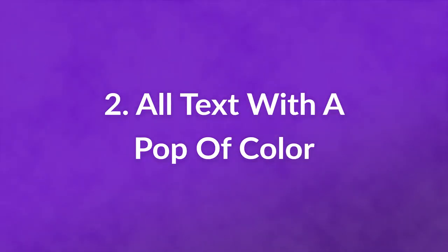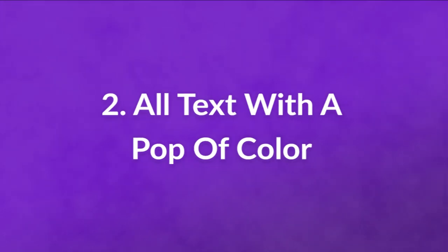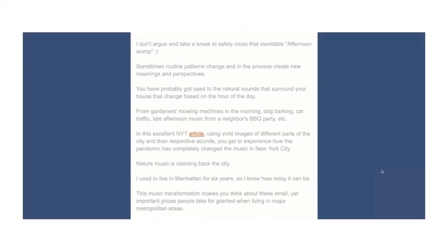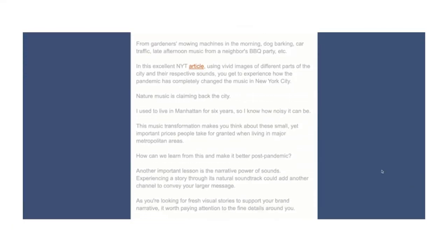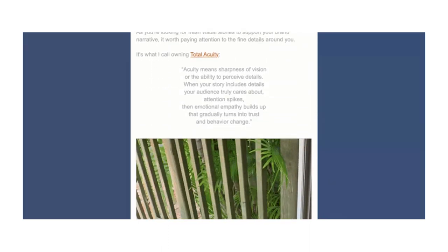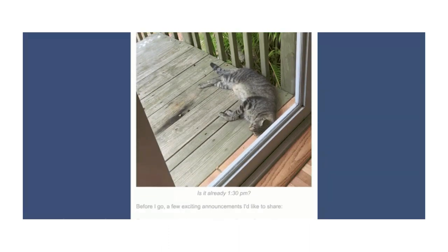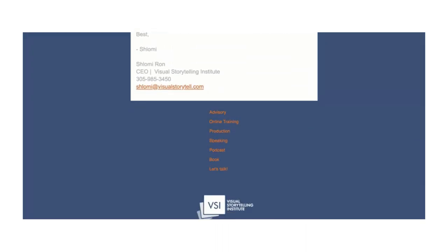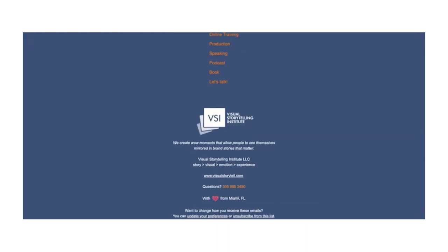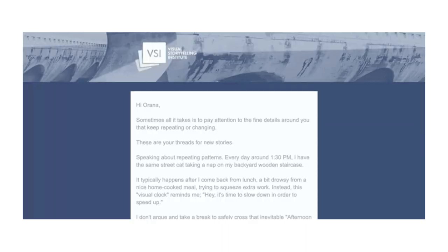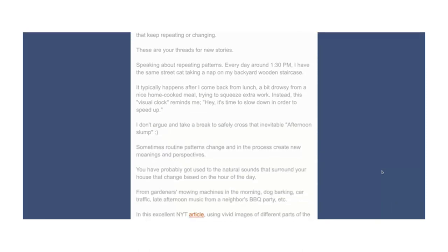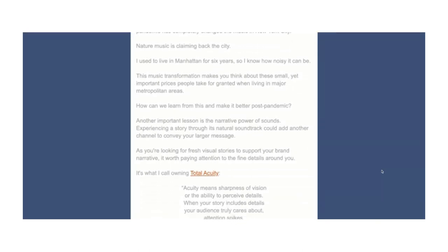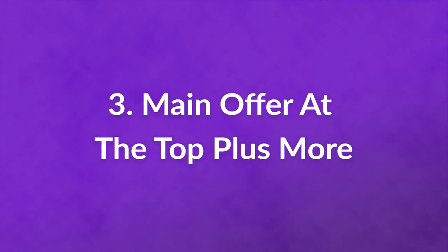Number 2: All-Text With A Pop Of Color. This is a good technique if your readers prefer to read good content in an email, but your company is still quite visual in itself. This type of email is also good for welcome emails, a monthly newsletter, or a reminder that you have something to offer. Remember that all-text emails rely heavily on storytelling to be successful.